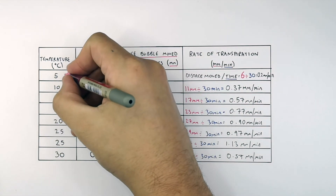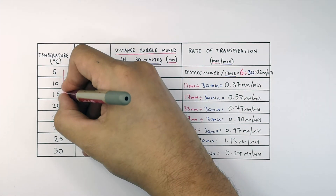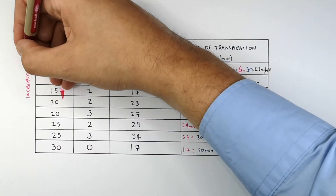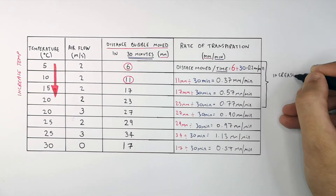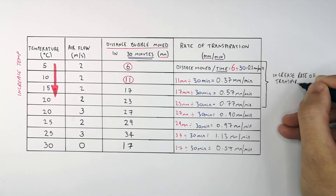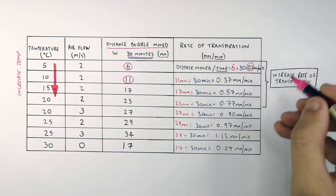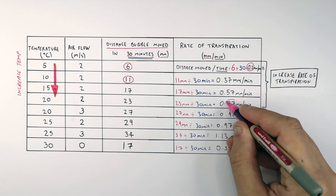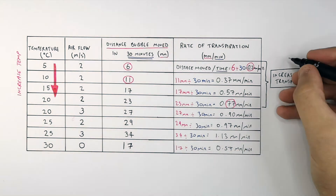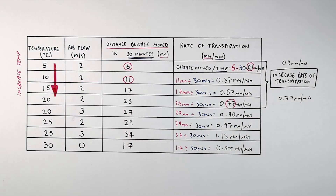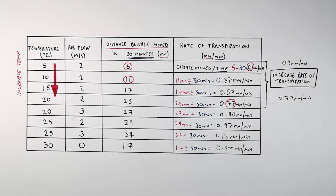As we increase the temperature from 5°C to 20°C, there was an increase in the rate of transpiration from 0.2 millimeters per minute to 0.77 millimeters per minute. This is due to an increased rate of evaporation of water from the stomata and out of the leaf.